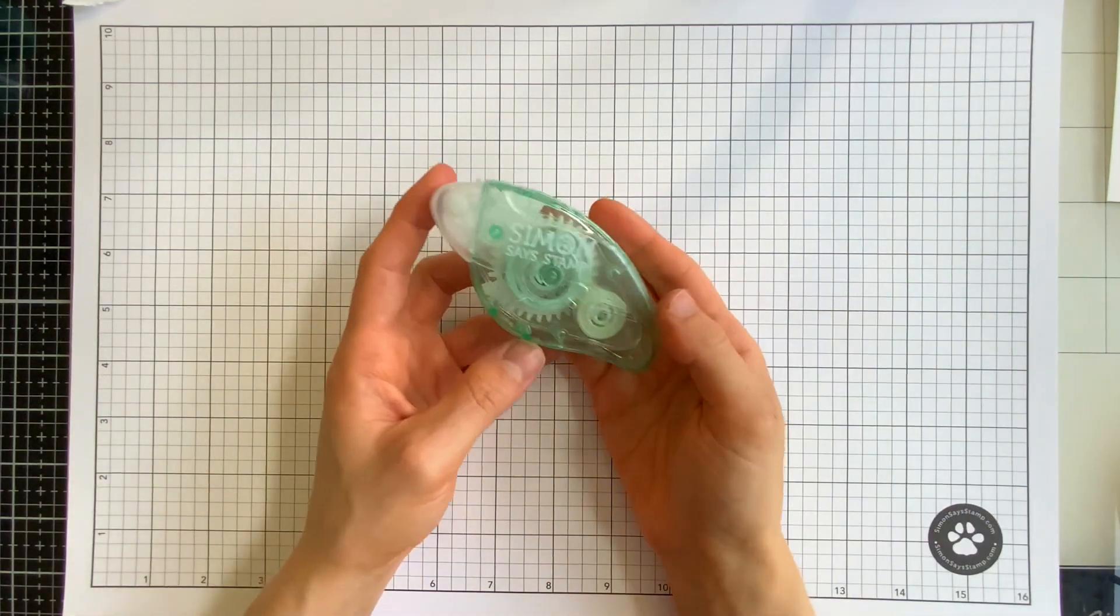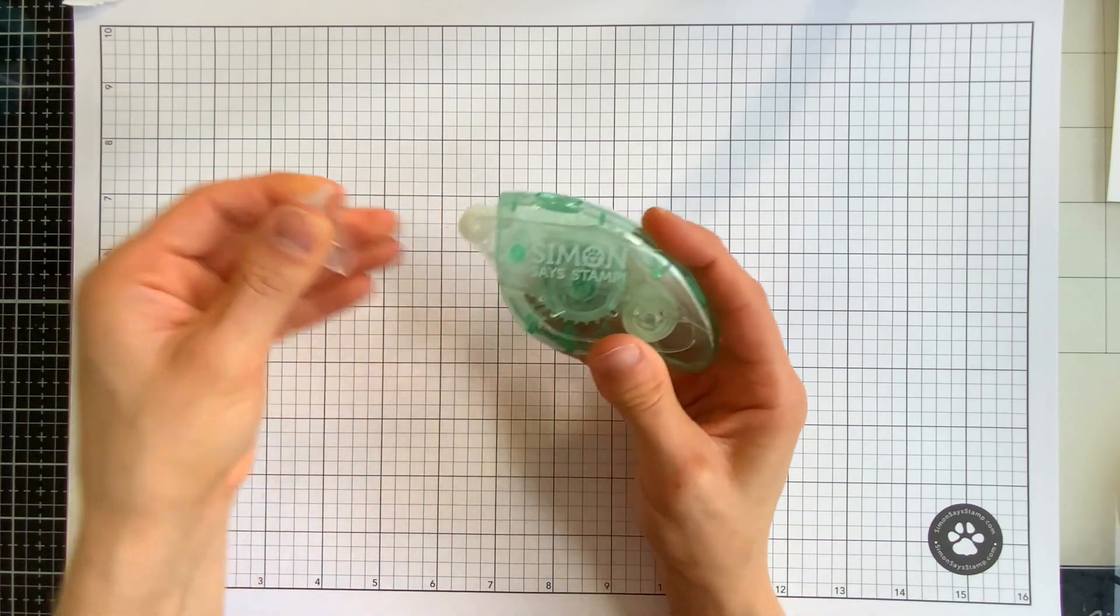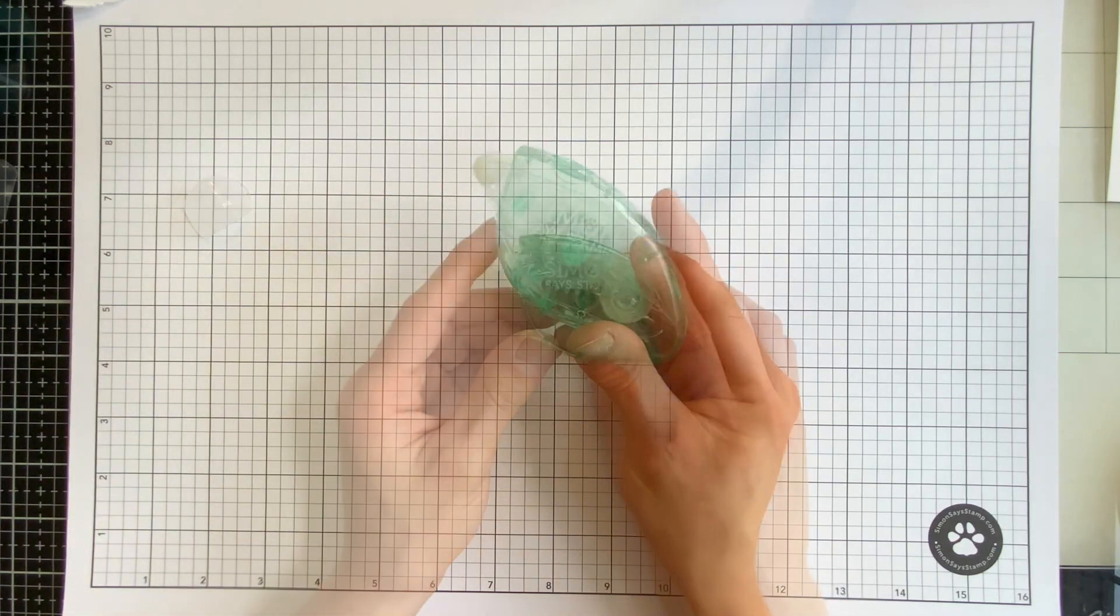The adhesive is initially repositionable but it becomes permanent after a few minutes of bonding. We also have a pack of dot runner refills available so you never have to worry about running out of this adhesive. It's very easy to refill.